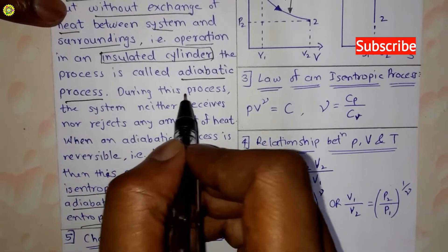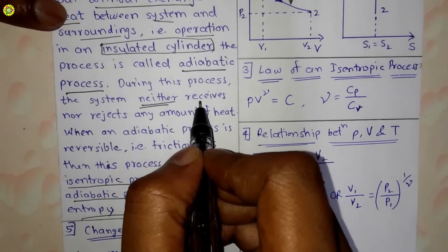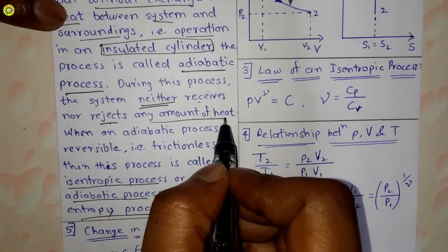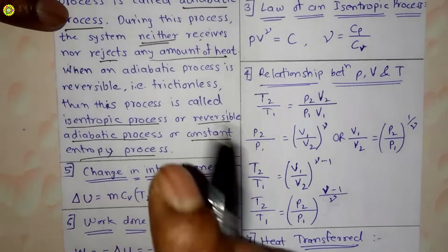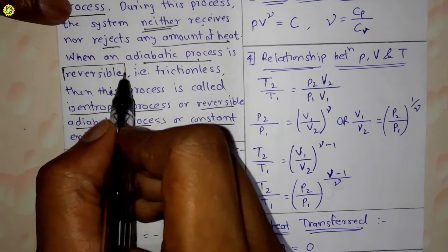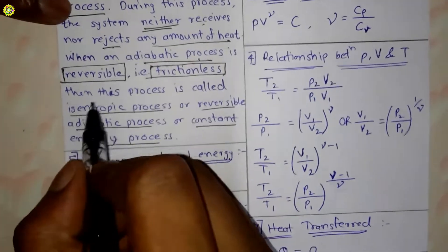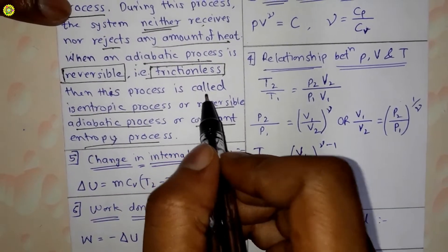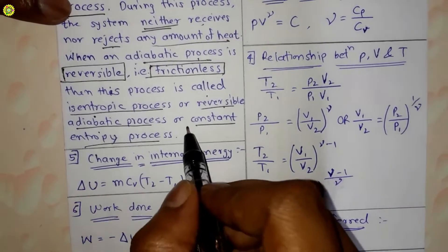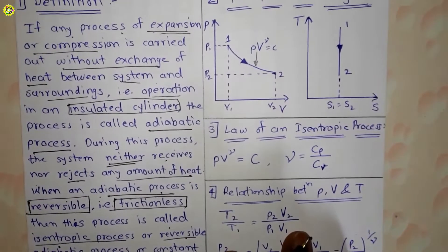During this adiabatic process, the system neither receives nor rejects any amount of heat. Further, when an adiabatic process is reversible, that is frictionless, then this process is called an isentropic process, reversible adiabatic process, or constant entropy process.